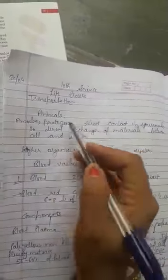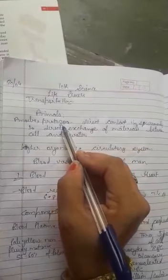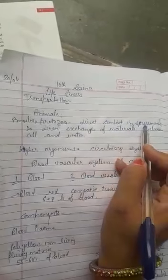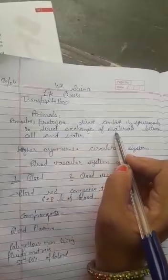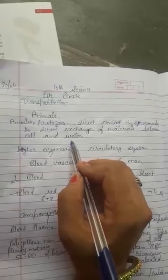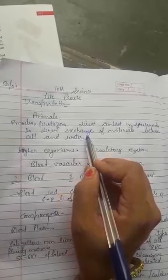You know amoeba and protozoa are unicellular organisms, so they are in direct contact with their surrounding. Direct exchange of material like gases and nutrients takes place, so they don't need any special circulatory system because they are unicellular and in direct contact with their surrounding.